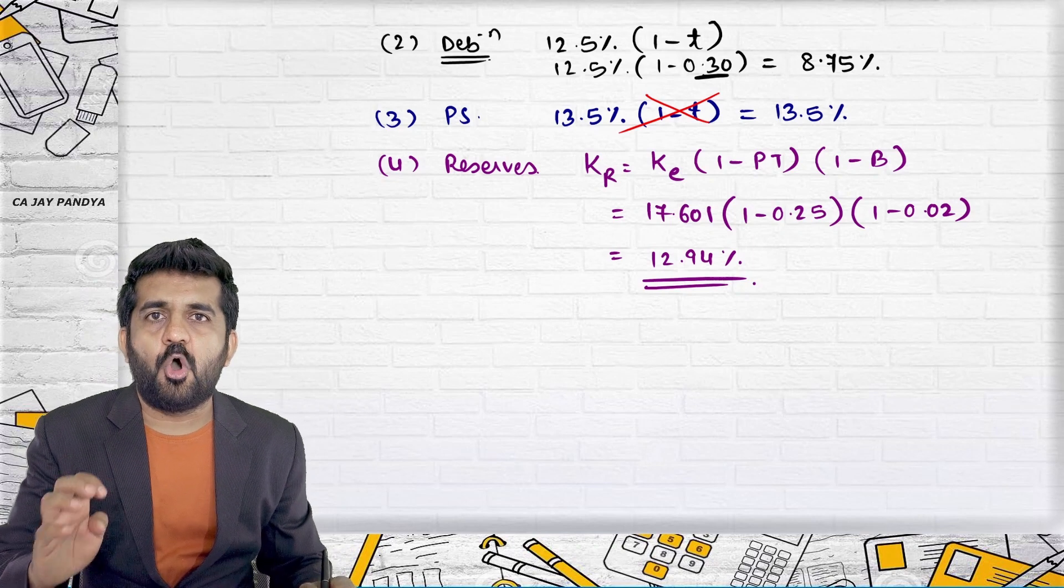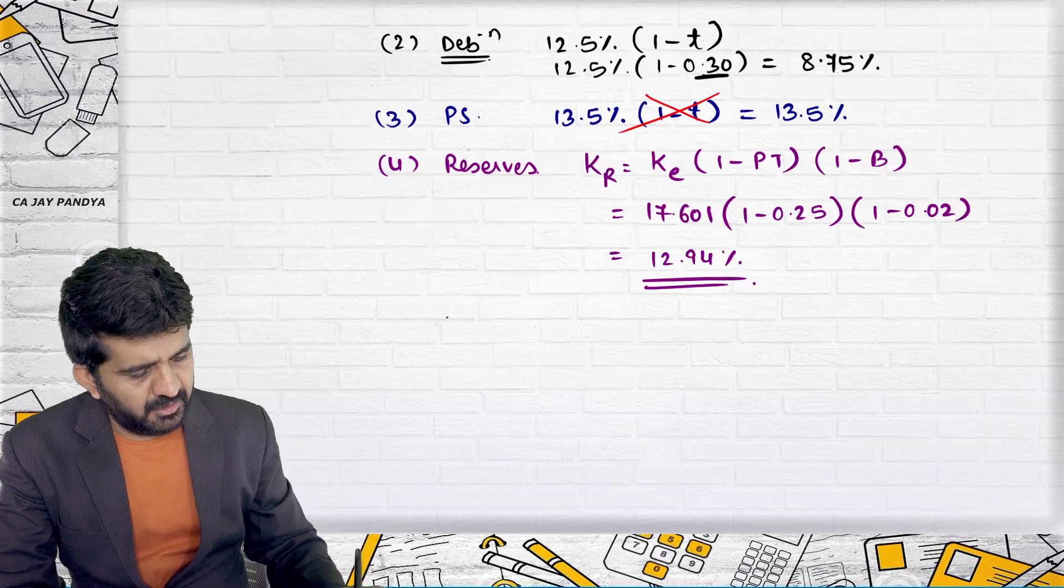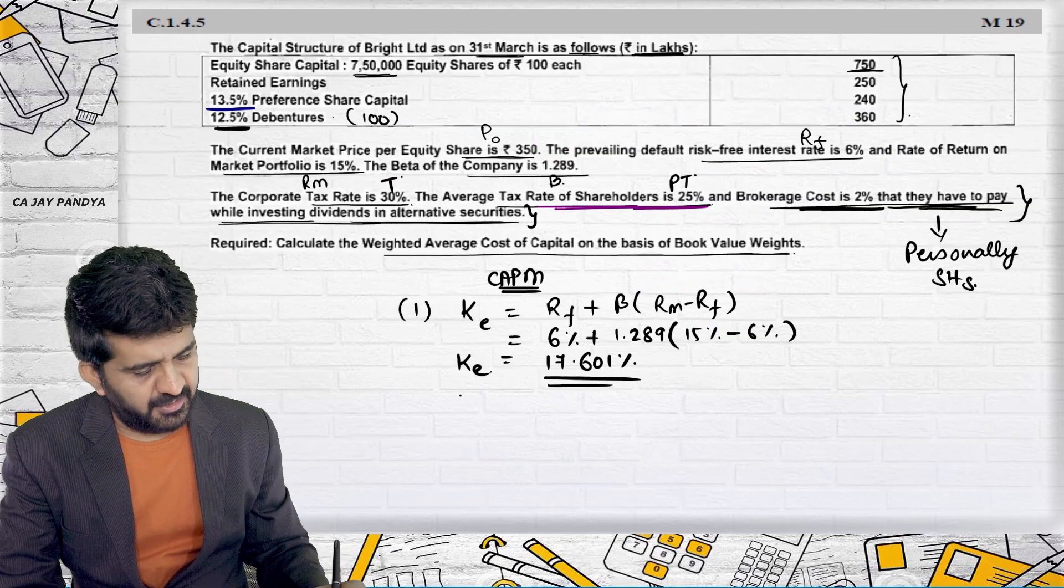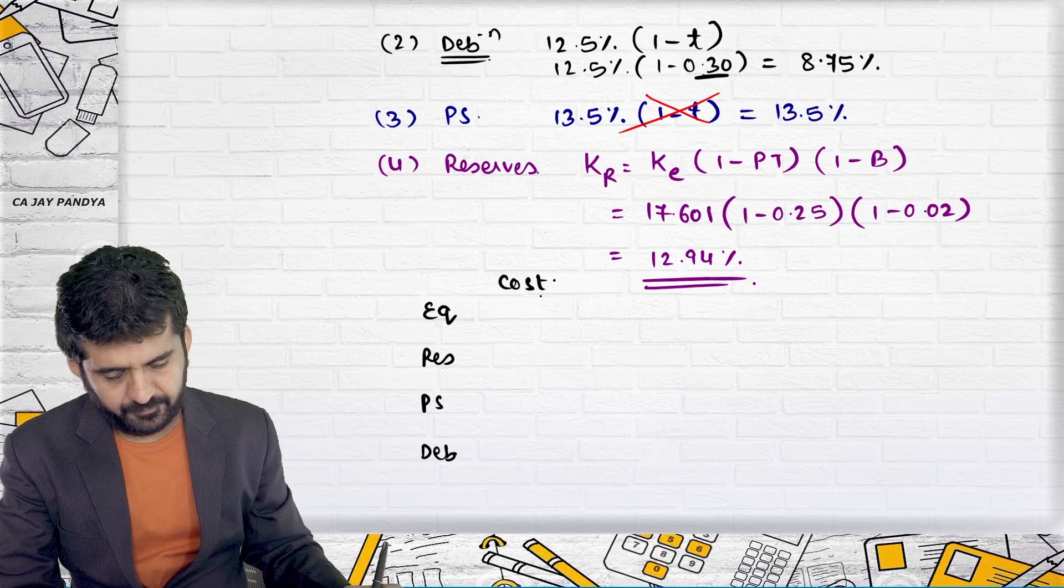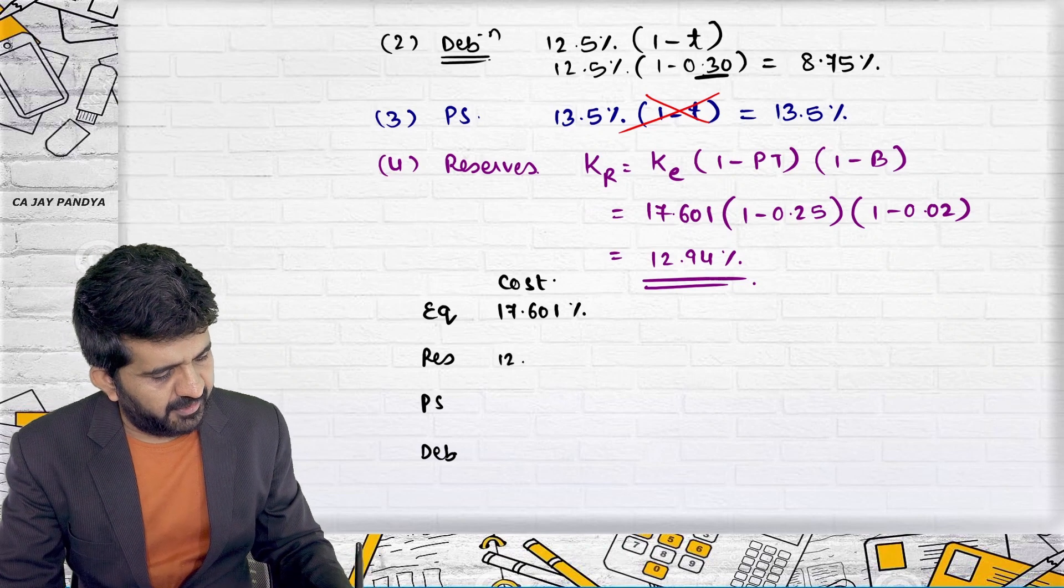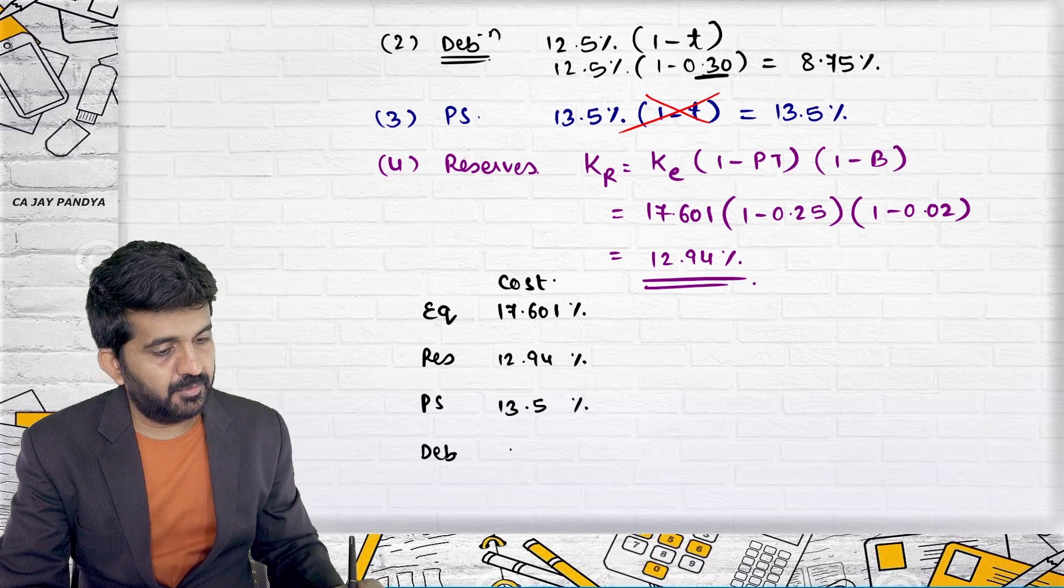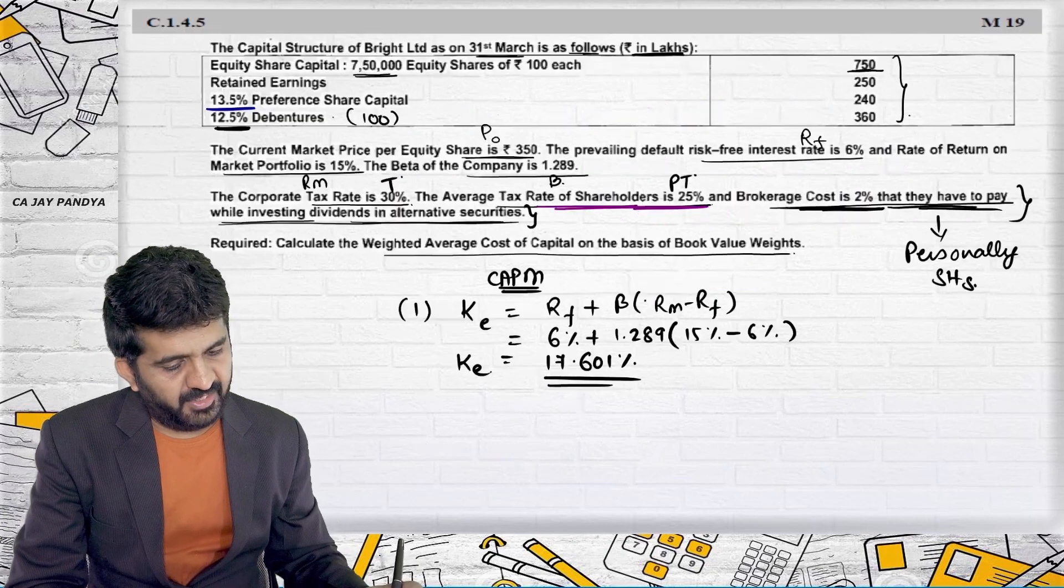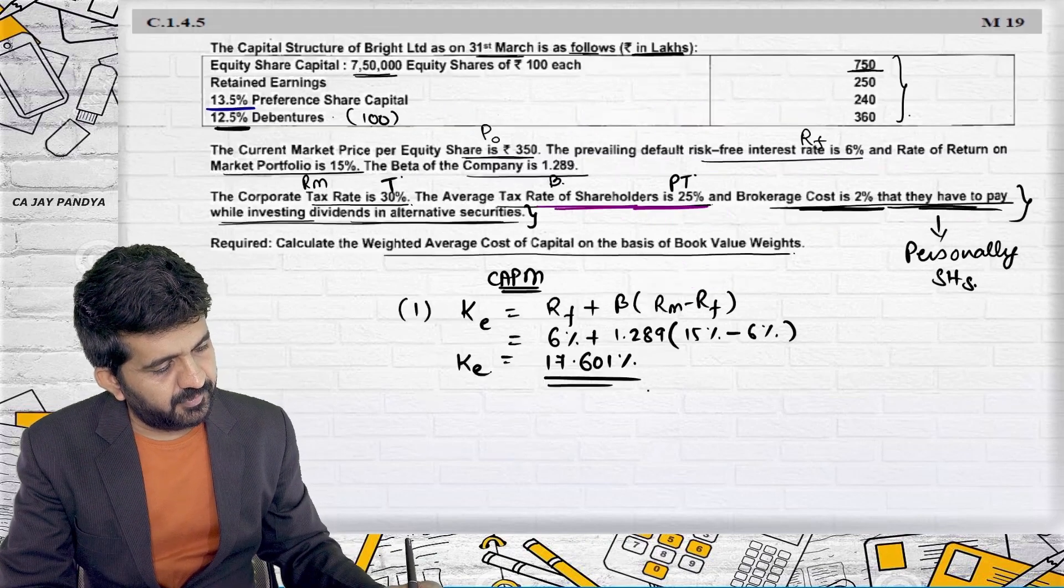So we are having practically all costs, all four sources cost. Let me write down in this sequence: Equity, reserves, preference shares and debentures. First cost, equity is 17.601. Reserves is 12.94. Preference shares is 13.5. Debentures is 8.75. What will be weights? Weight will be 750, 250, 240, 360.